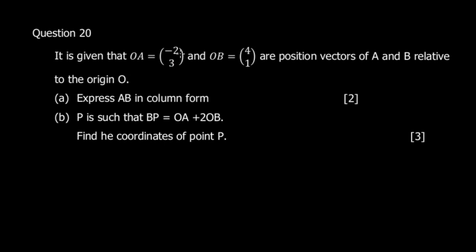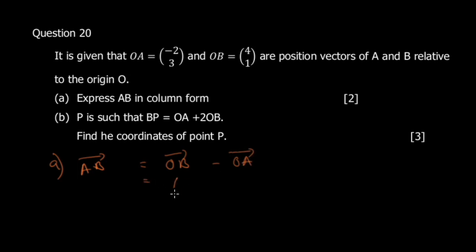Question 20: OA = (-2, 3) and OB = (4, 1) are position vectors of A and B relative to the origin. Express AB in column form. The rule is AB = OB - OA. So AB = (4, 1) - (-2, 3) = (4+2, 1-3) = (6, -2).